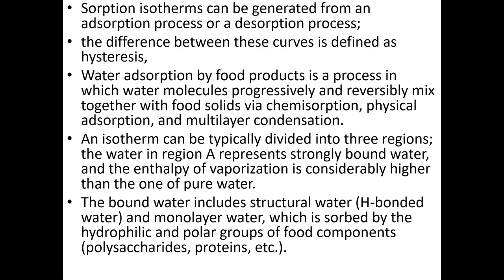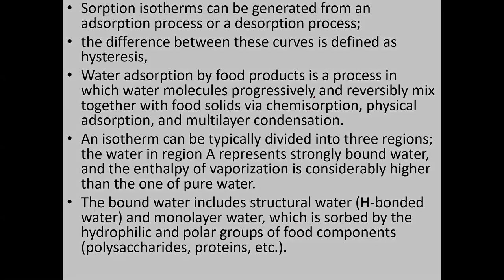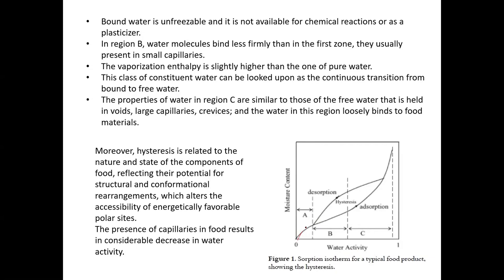A sorption isotherm can be generated from an adsorption process or a desorption process — adsorption means absorbing moisture, desorption means giving out moisture. The difference between these two curves is defined as hysteresis. If you plot moisture content on the y-axis and water activity on the x-axis, you get an adsorption curve and a desorption curve, and hysteresis is the difference between them.